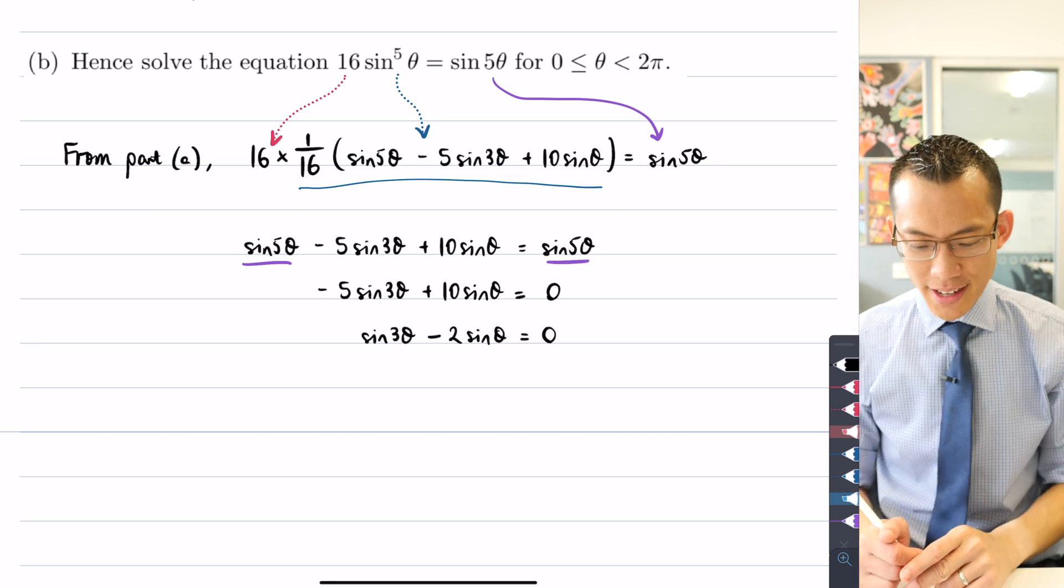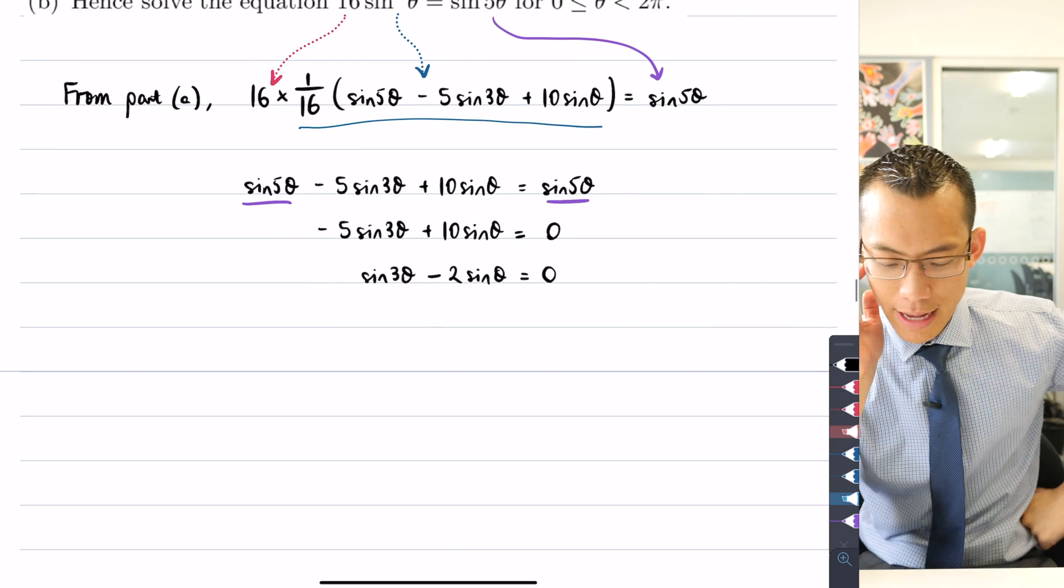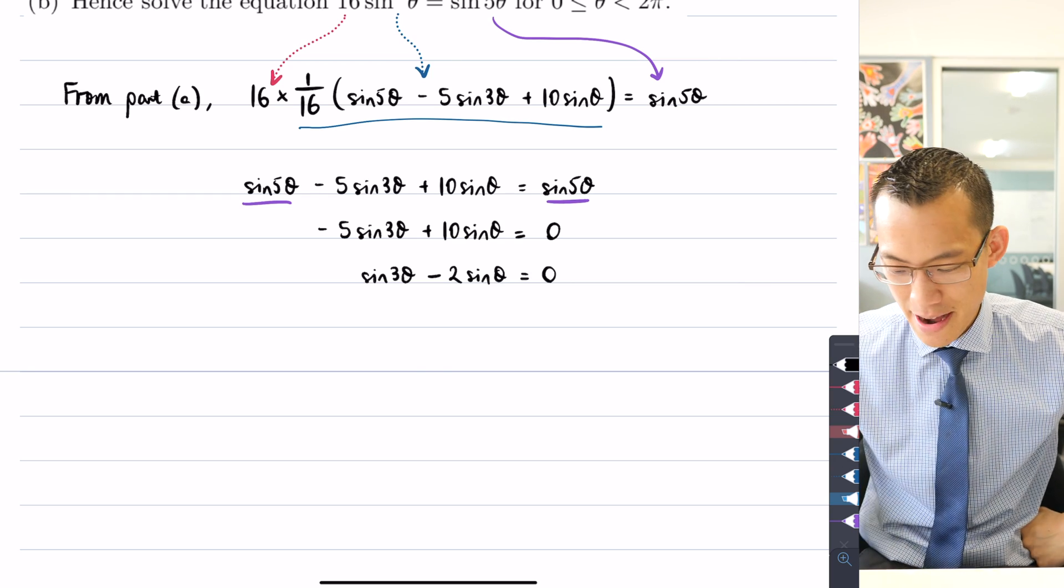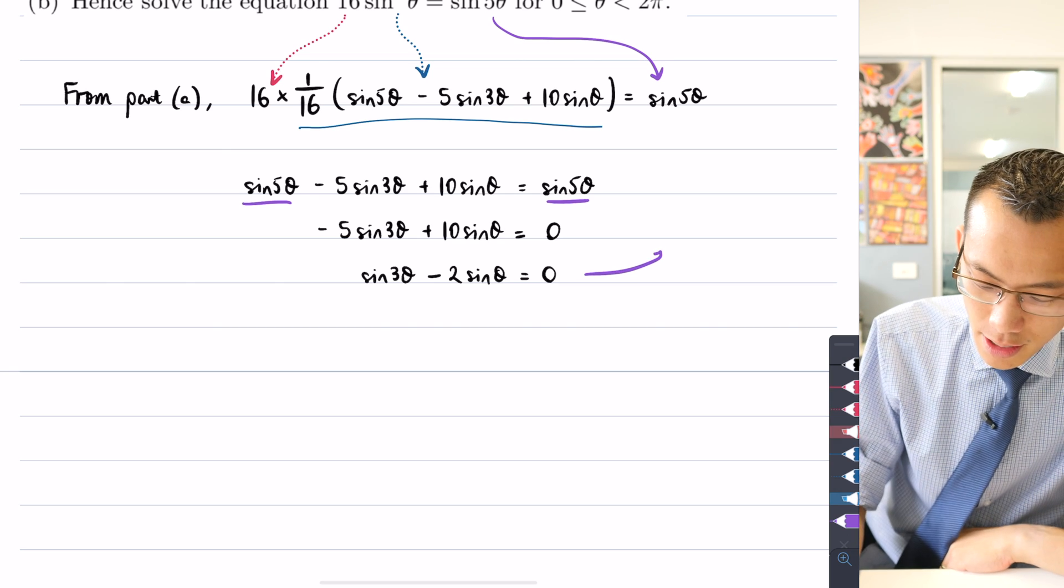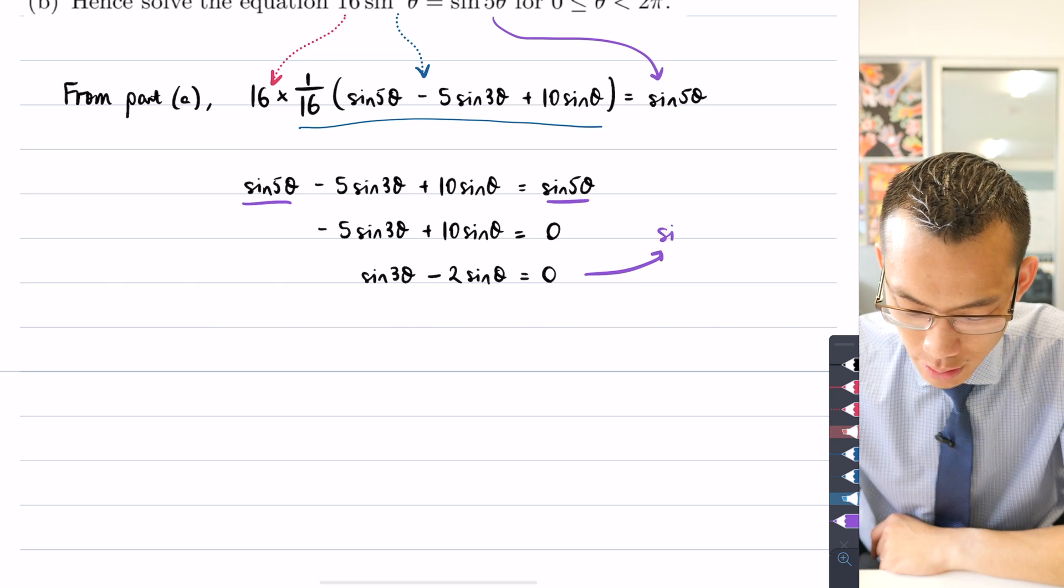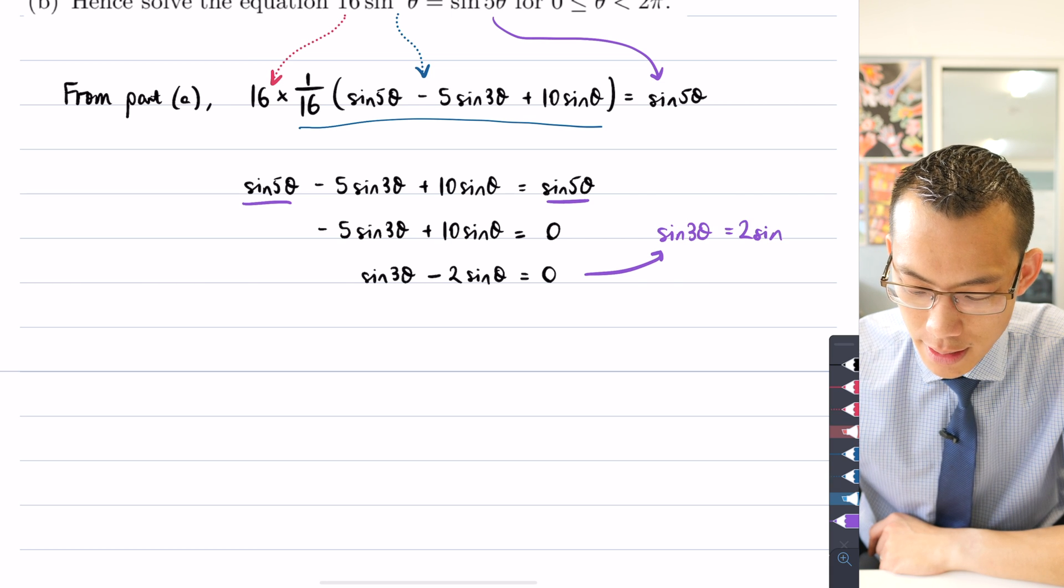Now, at this point here, I can do one of two things. You do a lot more than two things, but there are two things that in my mind will be useful. The first thing is you might think, okay, well, I can add 2 sinθ to both sides. That makes it look nice and neat. I can say sin 3θ equals 2 sinθ.